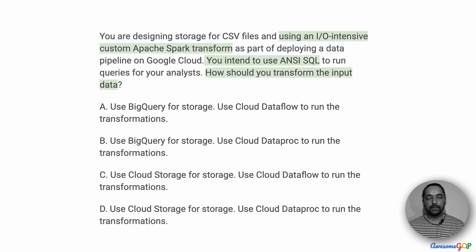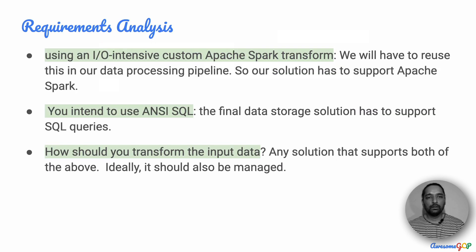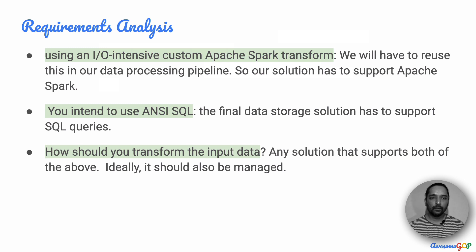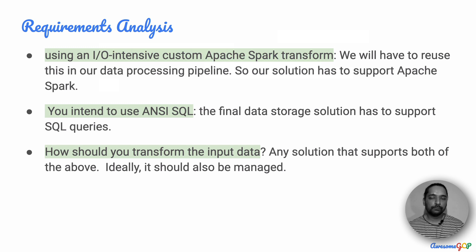The requirement is fairly straightforward, so let's analyze it a little more. We have to use an IO-intensive custom Apache Spark transform. This transform already exists and we will need to reuse it as part of our data processing pipeline within Google Cloud. So whatever solution we choose has to support Apache Spark. We also intend to use ANSI SQL, therefore our final data storage solution has to support SQL queries. The question is how should you transform the input data?